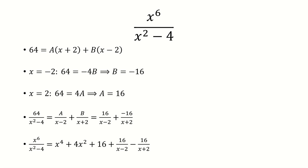So now we can combine this together and end up with x to the 4th plus 4x squared plus 16 plus 16 over x minus 2 minus 16 over x plus 2.